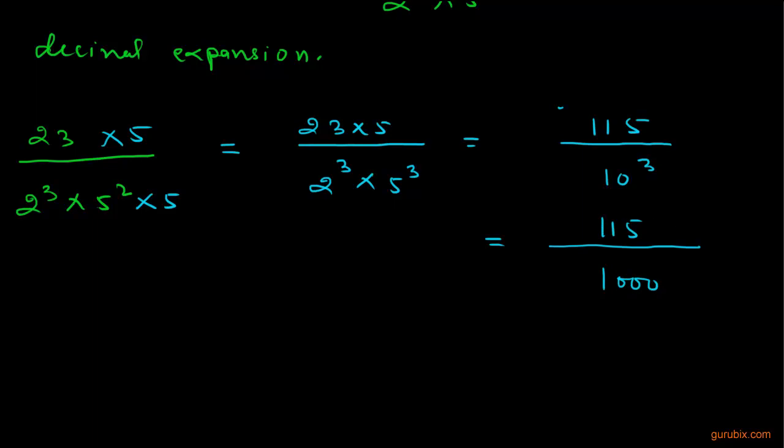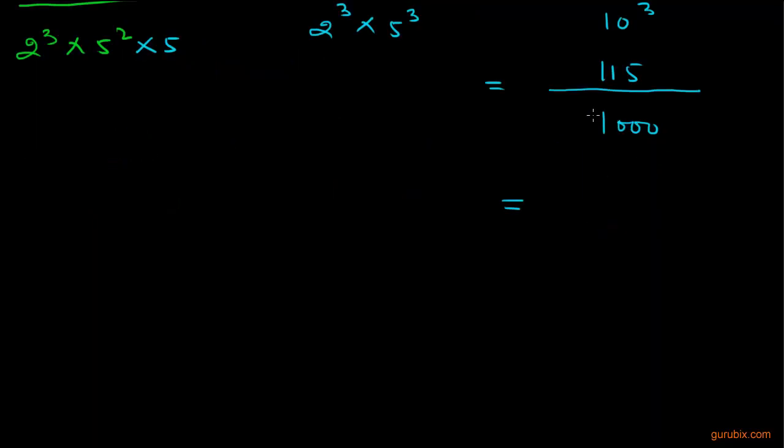Here is 115. First of all, we shall make the equal number of digits in both numerator and denominator, so we shall put a 0 here before this 115. Now we shall count how many zeros are there in denominator.